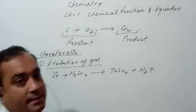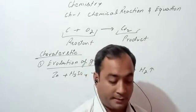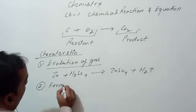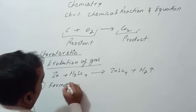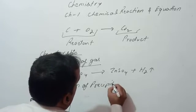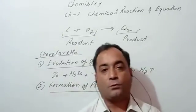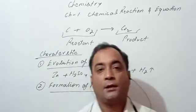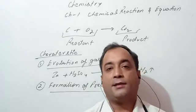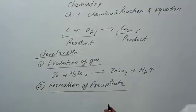So first characteristic is evolution of gas. The next is formation of precipitate. Precipitate is what happens to your solution - the precipitate will settle down at the bottom. So we can see the formation of precipitate.